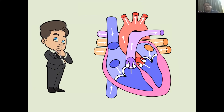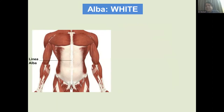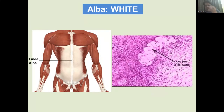Starting with white — 'alba.' The 'linea alba' is the white line present in the midline of the abdomen, formed by the aponeuroses of the flat abdominal muscles. Within the ovary, the corpus luteum degenerates to form white fibrous scar tissue known as the 'corpus albicans' — 'corpus' meaning body and 'albicans' meaning white.